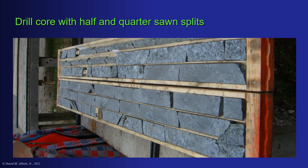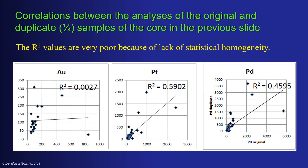Here we have a picture of a core box that has been split in half, with part quarter-sawed to collect duplicate field analyses. The problem is that the correlations between the analyses of the original and duplicate quarter samples are terrible because of the lack of statistical homogeneity. Platinum and palladium correlations are around half, which is not good, and gold correlations are terrible.